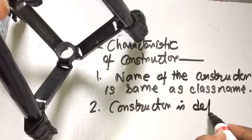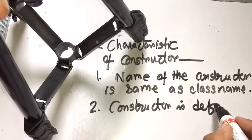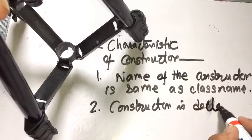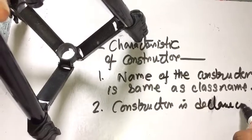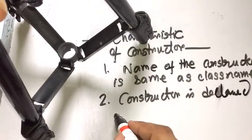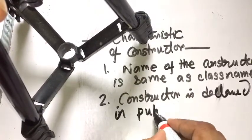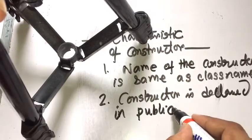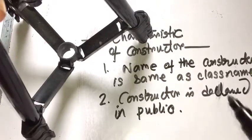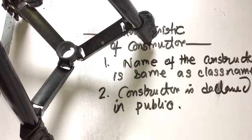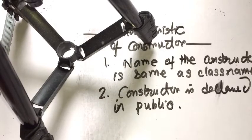Number two: constructor is declared in the public section, because the constructor needs to be called from main.